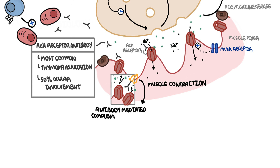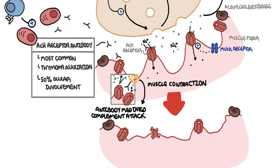The antibodies bind to the acetylcholine receptor and cause an antibody-mediated complement attack. The complement attack activates complement proteins — a series of proteins important in triggering and promoting the immune response. This complement activation and immune attack will reduce the number of acetylcholine receptors, and the destruction of acetylcholine receptors over time will lead to muscle fatigability and weakness.